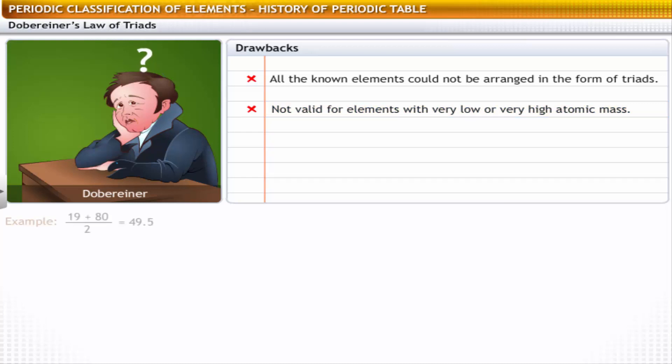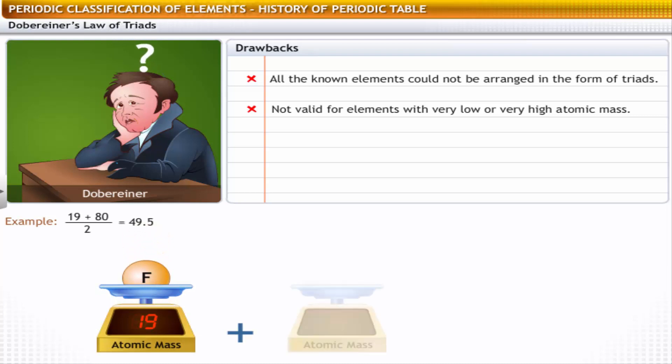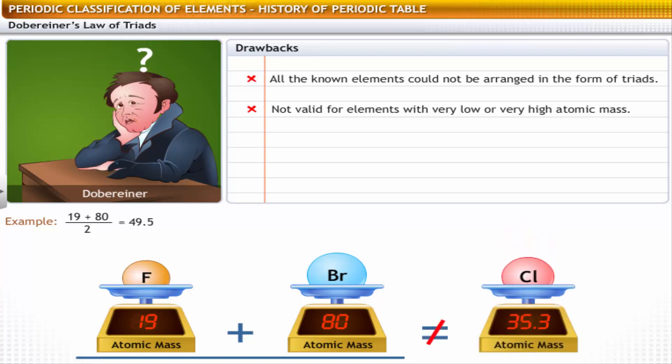For example, the arithmetic mean of the atomic masses of fluorine, 19, and bromine, 80, which comes to 49.5, varies significantly from the atomic mass of chlorine, which is 35.5.